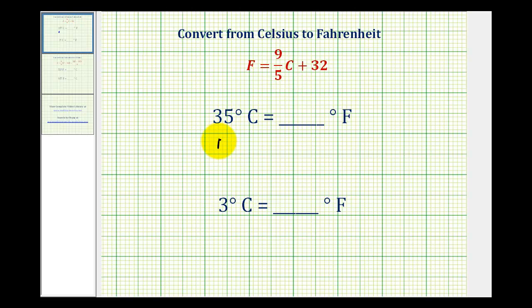So we'll have the Fahrenheit is equal to 9 fifths times 35. I'm going to write 35 as 35 over one, since this is in fraction form, plus 32.